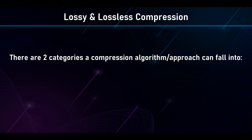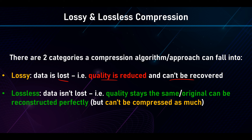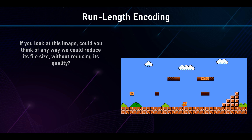There are two categories a compression algorithm or technique can fall into. The first is lossy — as the name suggests, data is lost, quality is reduced, and it can't be recovered when we decompress. In contrast, lossless means data isn't lost, quality stays the same, and the original can be reconstructed perfectly. However, the file size can't be reduced as much.